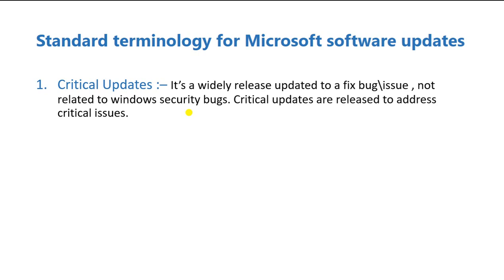Critical Updates are widely released every month. They fix bugs or issues, but are not related to security bugs. Remember: a Critical Update fixes bugs or a specific issue, but not Windows security bugs — security bugs come under vulnerabilities. Critical updates are released to address critical non-security issues.